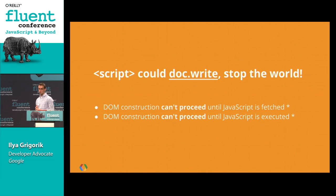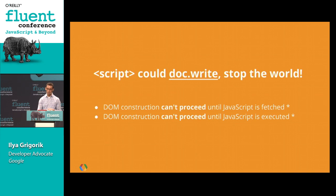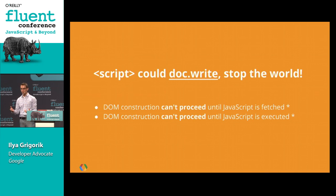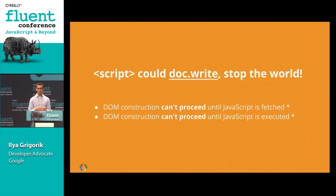We have to fetch the JavaScript and execute it before we can proceed. So putting a JavaScript tag at the top of your file will block you on the network until we fetch that file. This is why you've heard the advice: put your CSS at the top and JavaScript at the bottom. CSS at the top means we discover it early, fetch it quicker, and that unblocks rendering. JavaScript at the bottom means you'll still block, but hopefully by then most of the page is already constructed, so you're not blocking much.